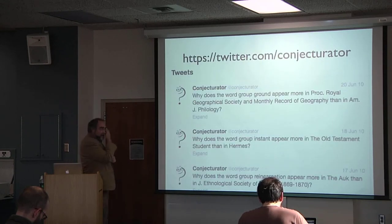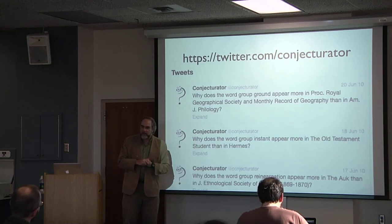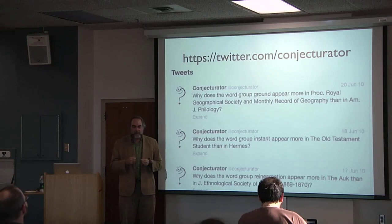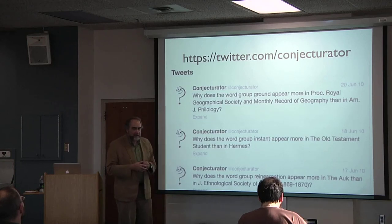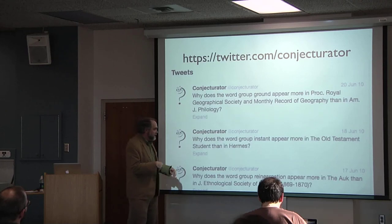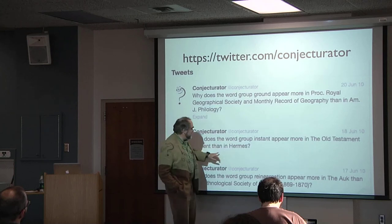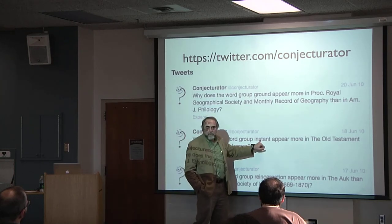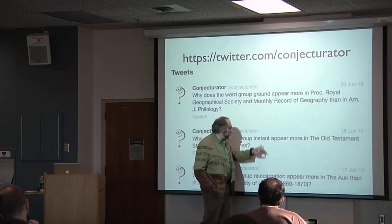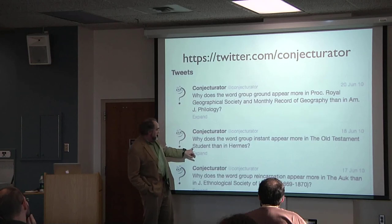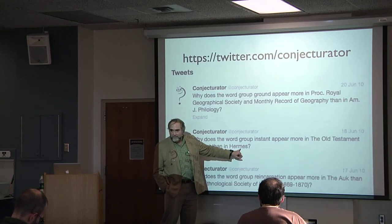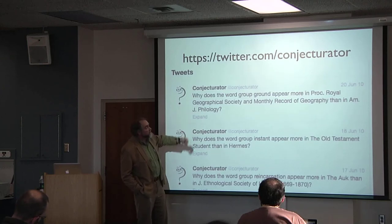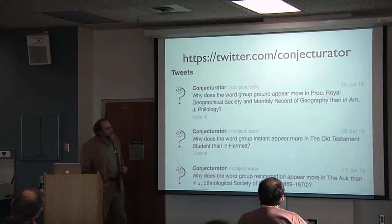One of the things Juola did with this — not with the same data — was feed it to Twitter. As the system generated assertions and tested them, he would spit them out as questions. For instance: 'Why does the word group instant appear more often in the Old Testament than in Old Testament Studies, than in Hermes?' Or: 'Why does the word group ground appear more in the Proceedings of the Royal Geographical Society and Monthly Record of Geography than in the American Journal of Philology?' You can see the problem.